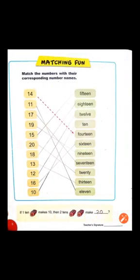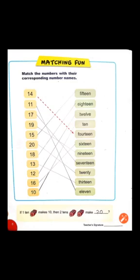Like this — آپ نے بالکل اس طرح match کرنا ہے: 11 کو 11 کے ساتھ، 17 کو 17 کے ساتھ، 19 کو 19 کے ساتھ، 15 کو number name 15 کے ساتھ، 20 کو number name 20 کے ساتھ، 18 کو 18 کے ساتھ، 13 کو 13 کے ساتھ، 12 کو 12 کے ساتھ، 16 کو number name 16 کے ساتھ، اور last پہ 10 کو number name 10 کے ساتھ۔